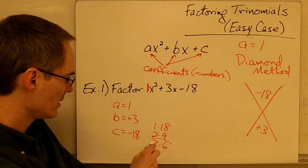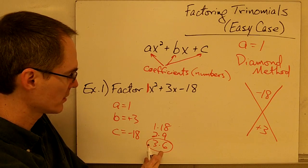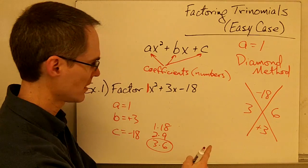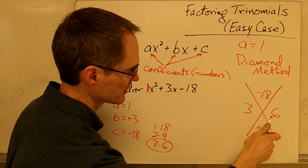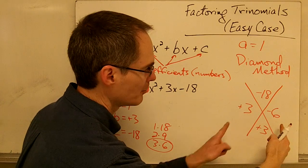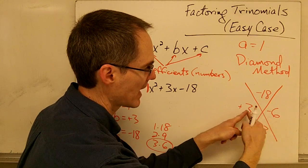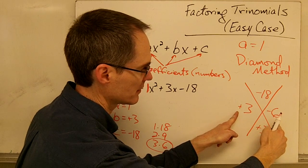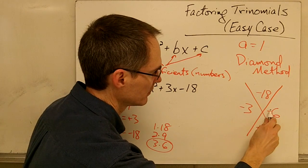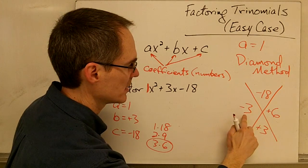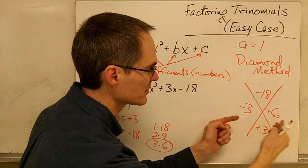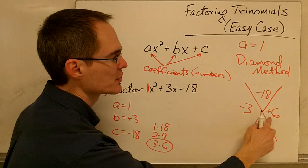It looks like 3 and 6 are a good choice. So 3 times 6 is 18, but I need negative 18, which means one of them has to be negative. If I make 3 positive and 6 negative, that gives me negative 18, but adding them gives me positive 3 plus negative 6, which is negative 3 — so I have my signs mixed up. I need negative 3 and positive 6: negative 3 times positive 6 is negative 18, and negative 3 combined with positive 6 gives positive 3. Those are the two numbers I'm looking for.